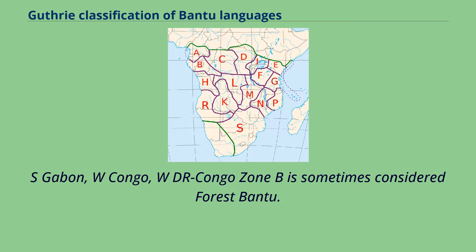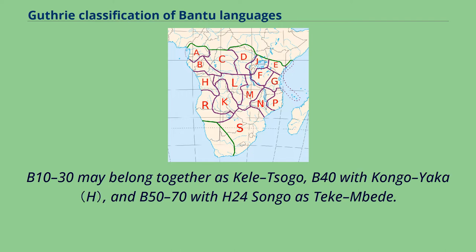Zone B covers southern Gabon, western Congo, and western D.R. Congo, and is sometimes considered Forest Bantu. B10–B30 may belong together as Kelate-Sogo, B40 with Congo Yaka, and B50–B70 with H24 Songo as Teke and Bid.